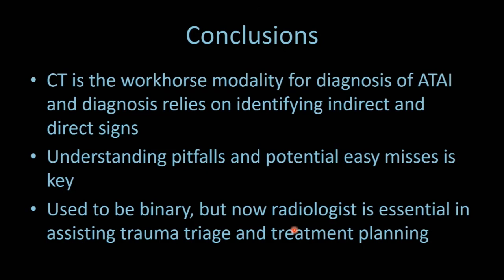In conclusion, CT is the workhorse modality for the diagnosis of acute traumatic aortic injury, and our diagnosis relies on identifying indirect and direct signs. Understanding pitfalls and potential easy misses is key. When I look at any trauma CT, the first thing I do is look for a mediastinal hematoma, and the second thing is follow the aorta and branch vessels from top to bottom. This used to be binary, but now the radiologist is essential in assisting trauma triage and treatment planning.